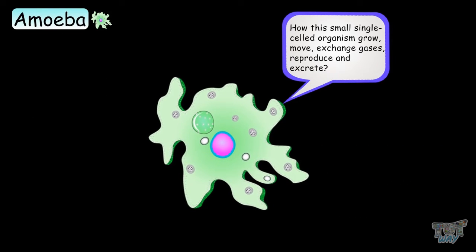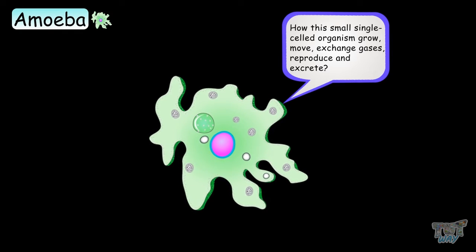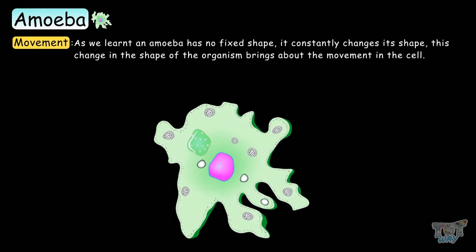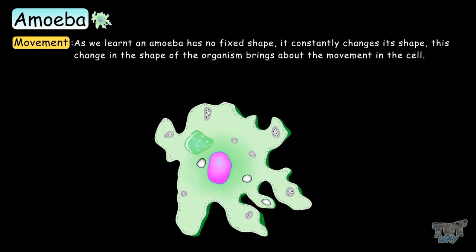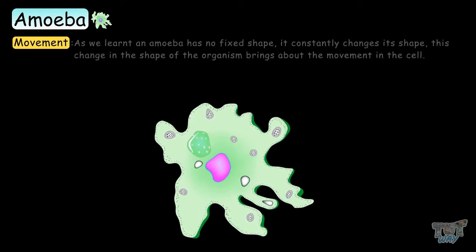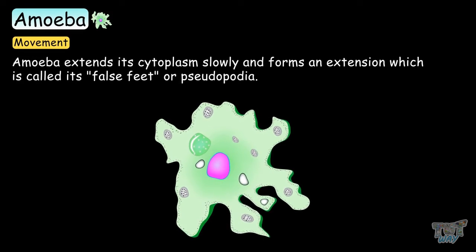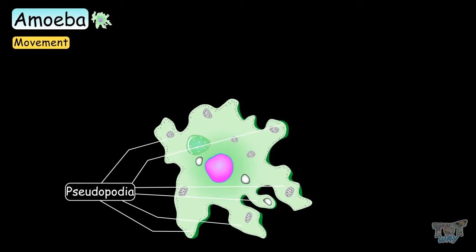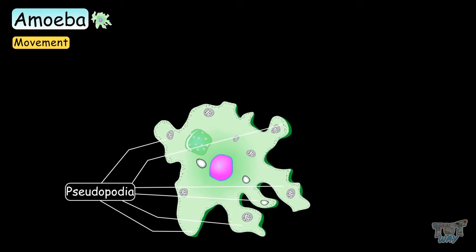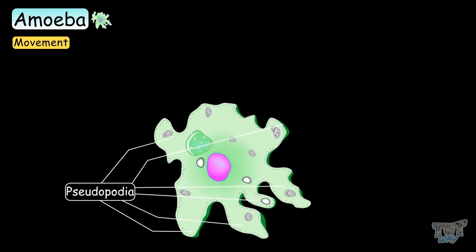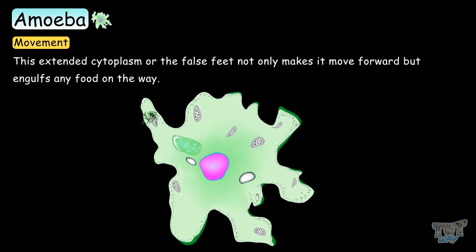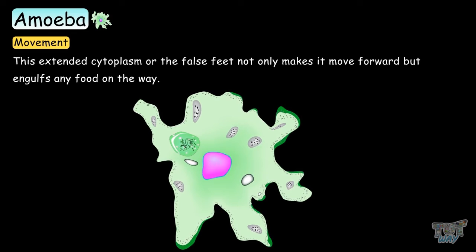Now let's learn how this small, single-celled organism grows, moves, exchanges gases, reproduces, and excretes. Movement: an amoeba has no fixed shape and it constantly changes its shape, and this change brings about movement of the cell. The amoeba extends its cytoplasm slowly, forming an extension called its false feet, or pseudopodia. It is called false feet because the pseudopodia becomes a temporary feet-like structure to help it move forward. This extended cytoplasm not only helps it move forward but also engulfs any food on the way. This is known as amoeboid movement.